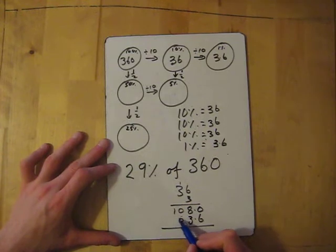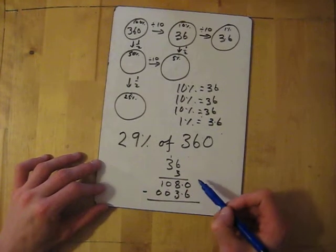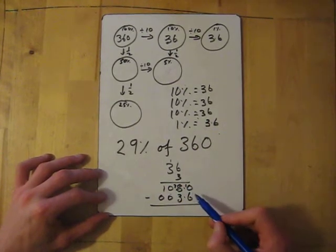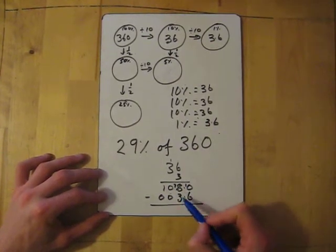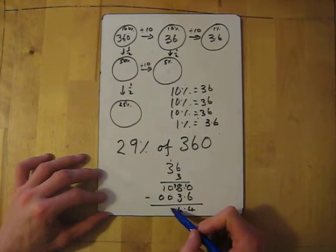Put 0 in the gaps. 0 take away 6—remember I need to borrow if it's smaller—so it becomes a 7. It's 10 take away 6 which is 4. 7, put the point in, 7 take away 3 which is 4, then the 0.